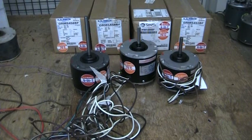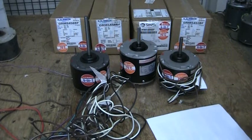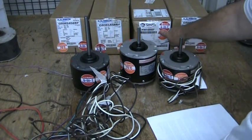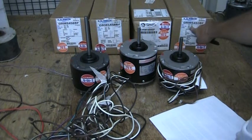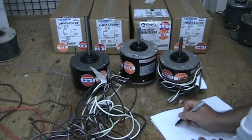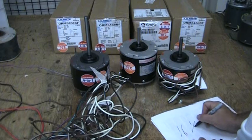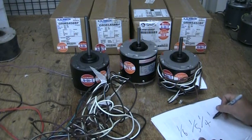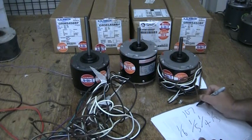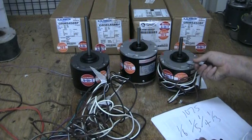I wanted to cover a couple of miscellaneous topics here about your motor order. These are 4-in-1 motors, 1-3rd through 1-6th, meaning that if your unit uses a 1-6th horsepower or a 1-5th horsepower or a 1-4th horsepower or 1-3rd, and let's say it's 1075 RPM, then you would order your 4-in-1 1075 RPM.